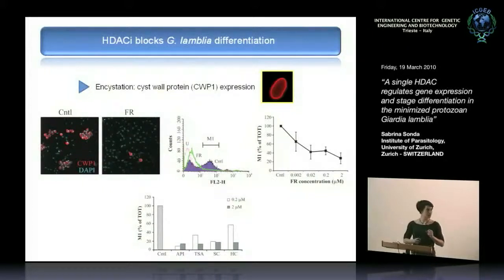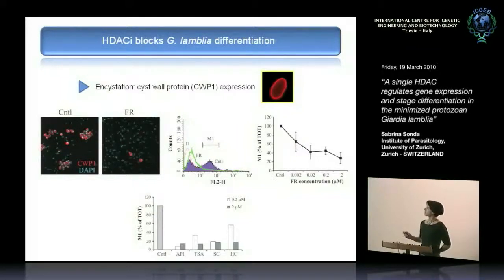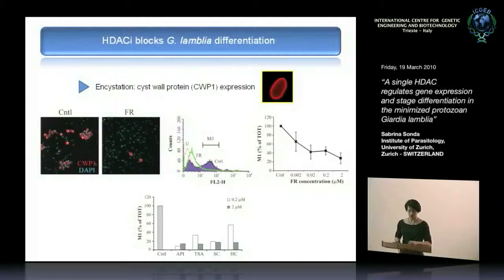After these controls, we monitored the expression of cyst wall protein 1 — the protein that forms the cyst wall. In controls, there is a high prevalence of cyst wall formation, but in the presence of the inhibitor, cysts are barely detected. Looking at total protein expression, there is normally a peak of cyst wall protein synthesis compared to untreated trophozoites, but when we add the inhibitor, synthesis is highly reduced. A dose-response experiment showed that even at low nanomolar concentrations the inhibitor is effective. Testing additional HDAC inhibitors confirmed they all act as inhibitors of stage differentiation, with slightly different potencies, further confirming the importance of this enzyme in the process.